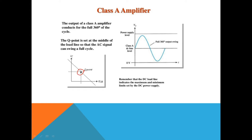Since the Q-point is adjusted in the center of the DC load line, we bias the transistor such that the Q-point is at the center. Therefore, whenever the AC signal is applied to the base of the transistor, the transistor will conduct for the complete positive half cycle and for the complete negative half cycle, meaning the transistor or amplifier will conduct for full 360 degrees. This is the class A power amplifier.